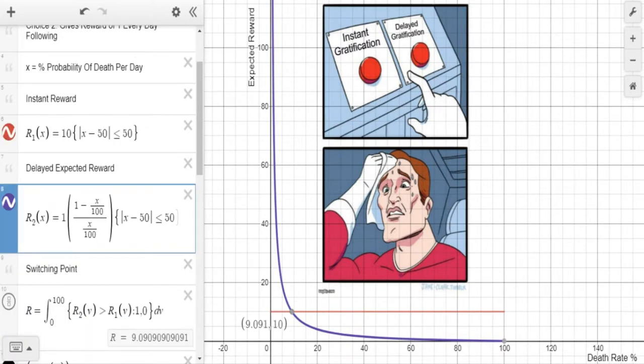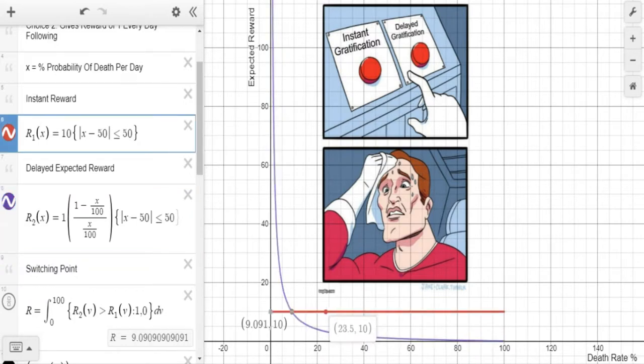Both of these are a calculation of the expected reward. Now very simply, if we go with the first button, choice one, we will get a simple reward of 10. However, if we go with the other one, we have to consider the probability that we will live to see tomorrow and get that reward and then keep on living every day following.